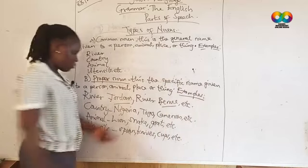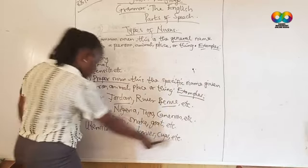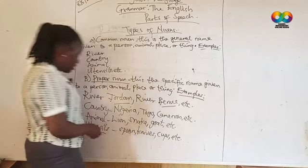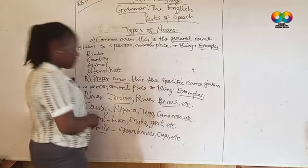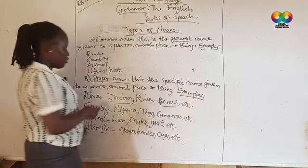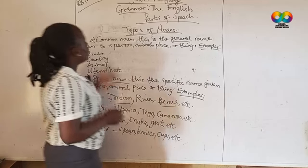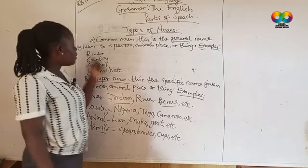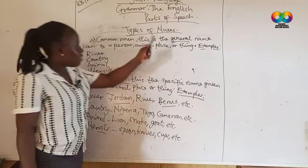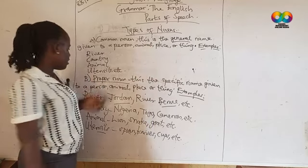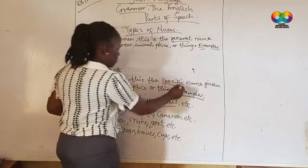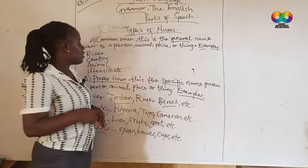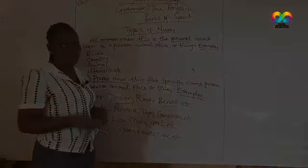We have spoon, knives, and cups — these are generally referred to as utensils. These are generally referred to as animals, and these are referred to as countries and types of river. Generally, the difference between the common noun and the proper noun is that the common noun names a person, animal, or thing generally, while the proper noun is the specific name given to an animal, place, or person. We'll go on a short break and be back with you.